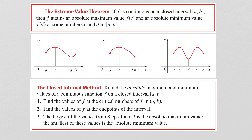I have some diagrams here to help us understand this theorem. In the first diagram, notice that we have a continuous function on the closed interval from a to b. Closed just means that the endpoints are included, and continuous means I can draw this without lifting my pen off the paper. In this particular situation, we have an absolute maximum value here and an absolute minimum value here.